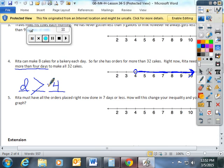Let's do another one together. Rita must have all the orders placed right now done in seven days or less. So, it can be seven days or it can be less. Now, this will change your inequality. We're still going to use D days. We need three things: variable, sign, number. It has to be done in seven days, so I know seven's my number, or less.